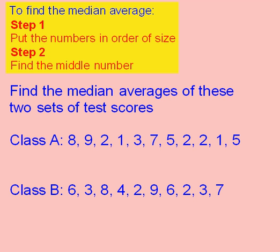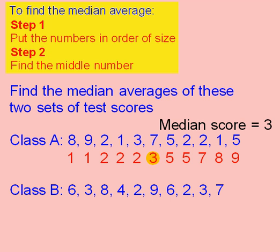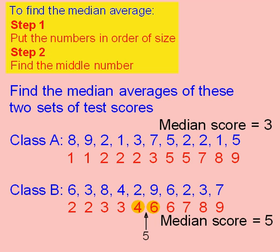Here are two medians for you to do. Press pause and have a go. When you're ready, press play. You should have started by putting the numbers in order. You then find that 3 is in the middle, so the median is 3. Put these numbers in order and you find that 4 and 6 are in the middle. The middle of 4 and 6 is 5, so the median is 5.